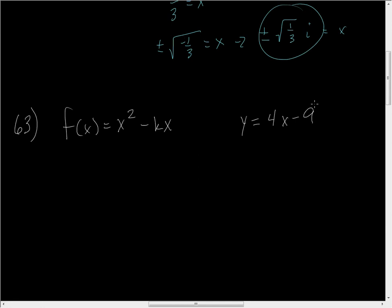First things first: we know that this line is tangent to the function, which means we know the slope. The derivative is the slope. If we take the derivative of f of x, we get 2x — k is a constant, so the derivative of a constant times x is just the constant. So the derivative is 2x minus k, and that must equal the slope of the tangent line, which is 4.